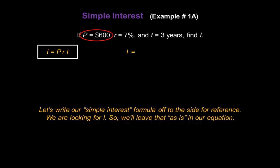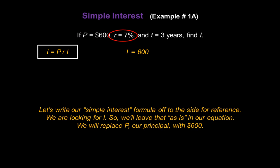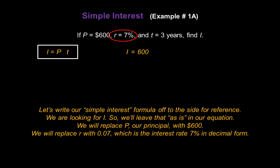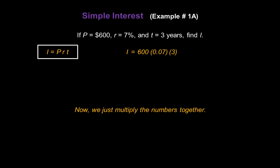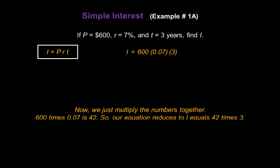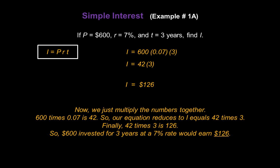The problem says P, the principal, is $600. So I'm going to replace P in the formula with the number 600. The rate is 7%, so let's replace R in the formula with 0.07, because that's the interest rate 7% in decimal form. We have a time period of 3 years, so we're going to replace T in the formula with the number 3. Now we just multiply the numbers together. 600 times 0.07 gives us 42. So our equation now looks like I equals 42 times 3, which gives us I equals $126. That means $600 invested for 3 years at a 7% rate would earn $126.